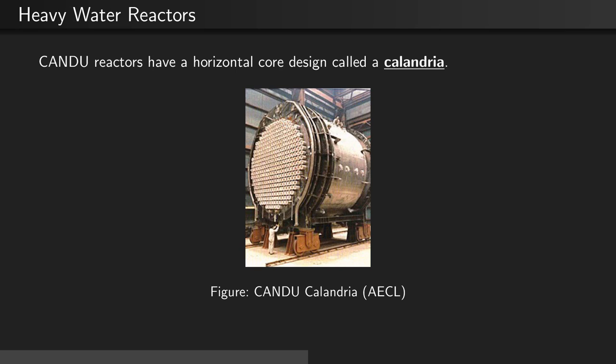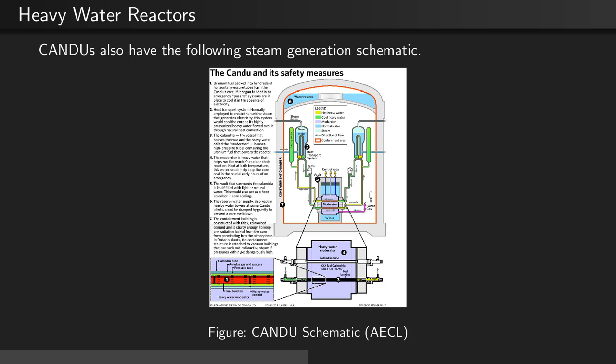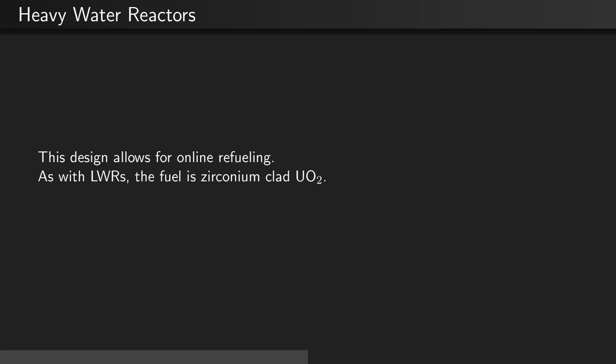CANDU reactors have a horizontal core design called a calandria, as seen here. CANDU fuel bundles are cylinders rather than cuboids, as seen here. A fuel bundle is around 50 centimeters long and weighs approximately 24 kilograms. CANDUs also have the following steam generation schematic, where there are multiple steam generation loops attached to their own generators and turbines. This design allows for online refueling.